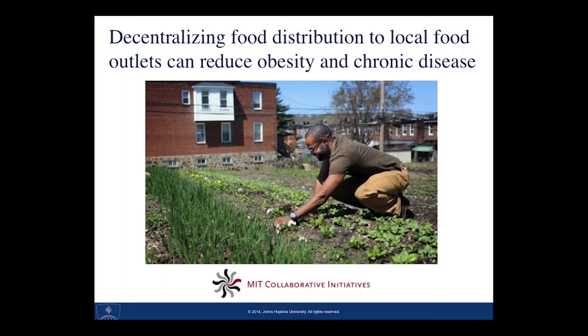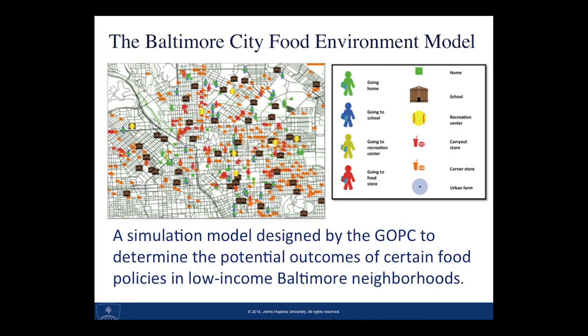Decentralizing food distribution to local food outlets can reduce obesity and risk for diet-related chronic disease. The Baltimore City Food Environment Model is a simulation model designed by the Global Obesity Prevention Center to determine the potential outcomes of certain food policies in low-income Baltimore neighborhoods.